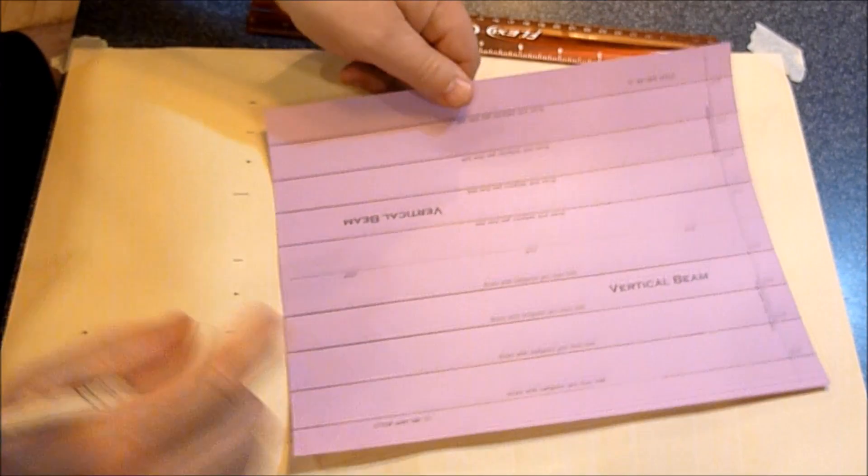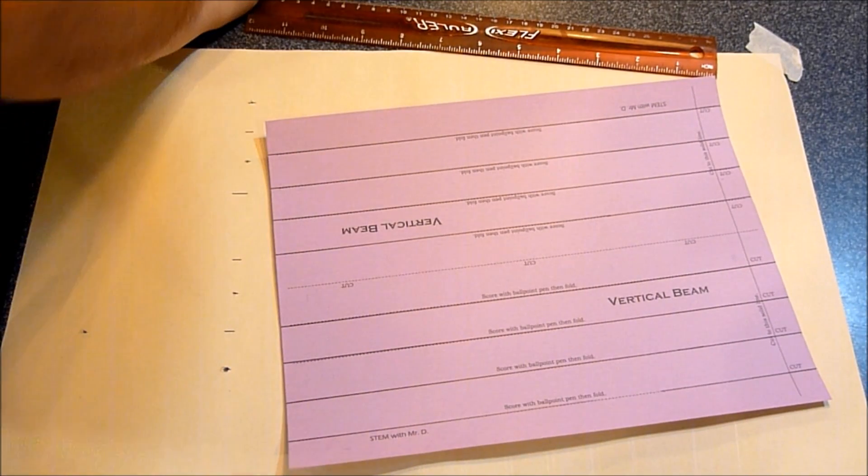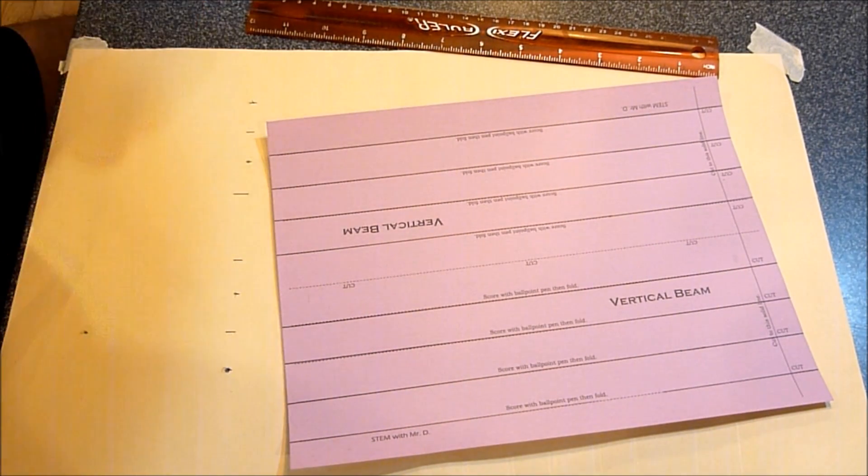So now I've scored all the lines except for the center line, which I'm going to cut. After you score your lines, you just make your cuts.